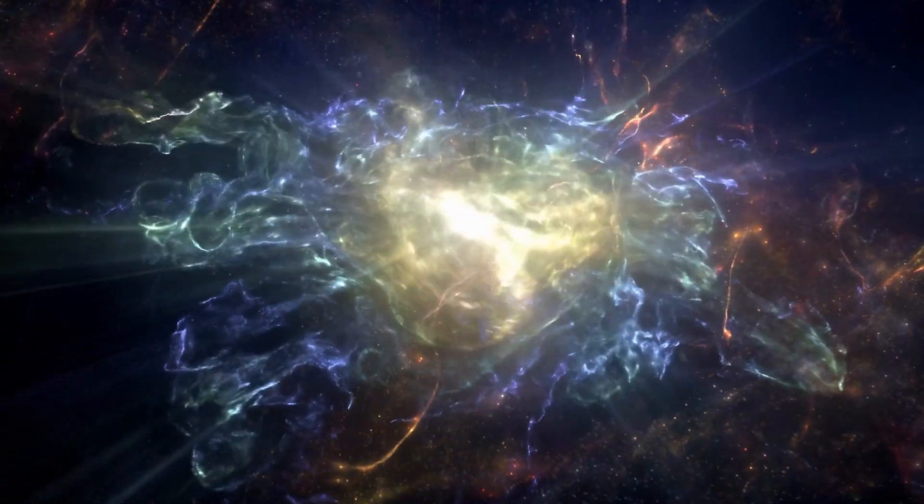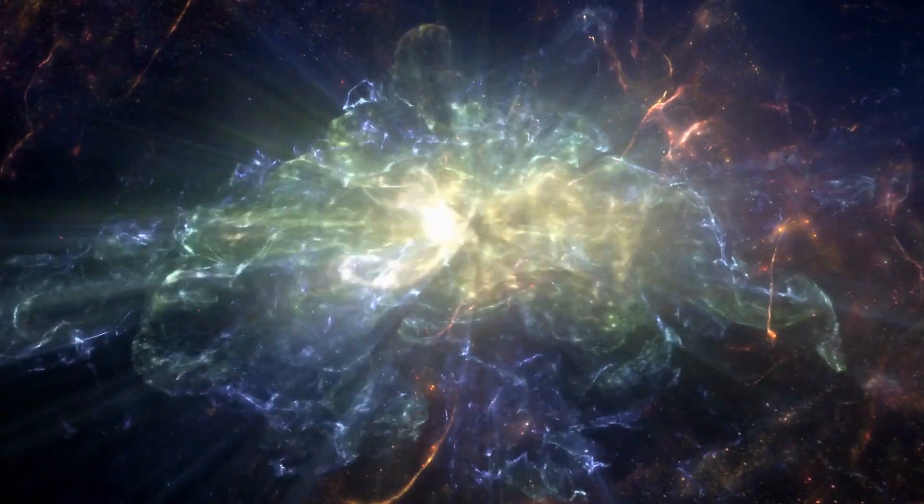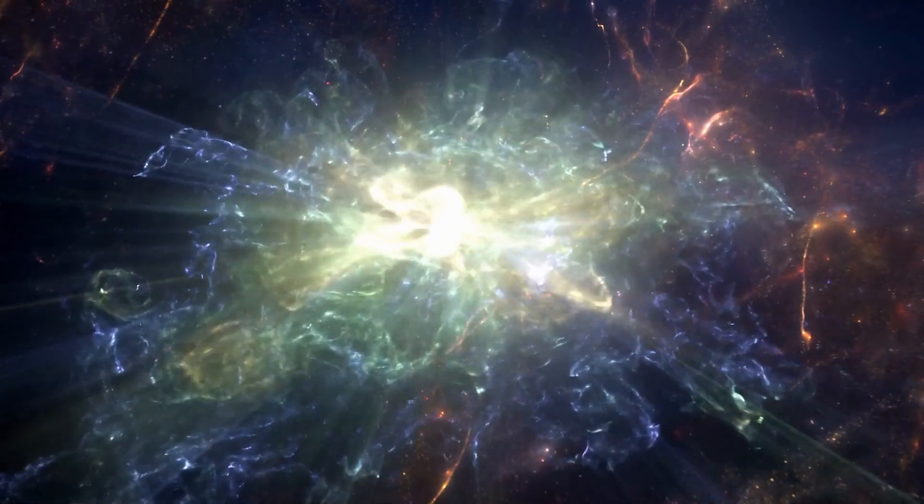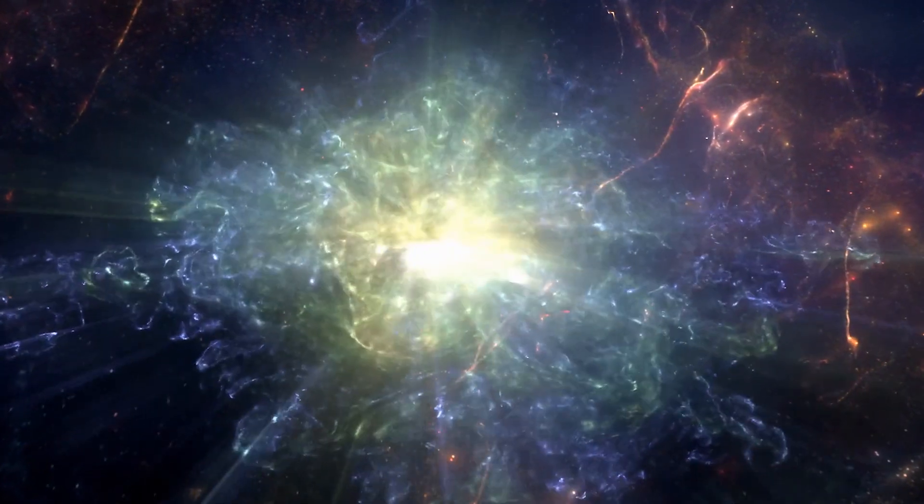It is commonly believed that this great luminosity originates from the friction caused by gas and dust falling into a supermassive black hole. They form an accretion disk, which converts about half the mass of an object into energy.